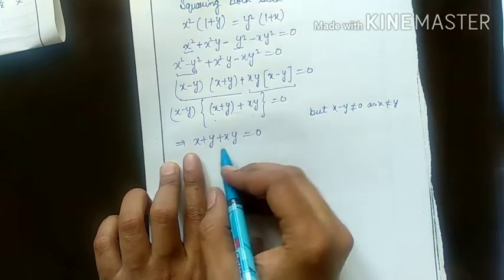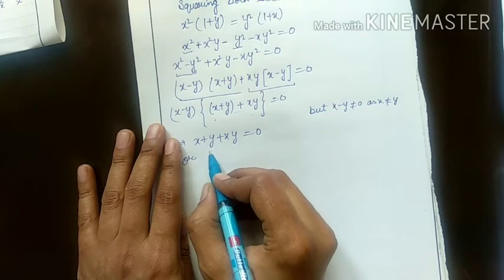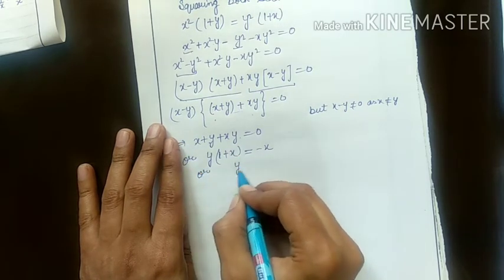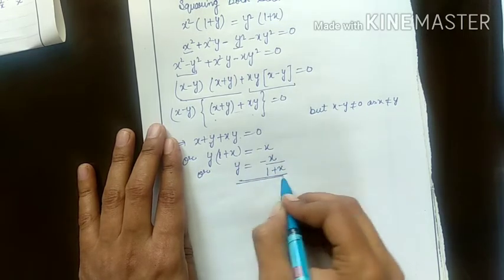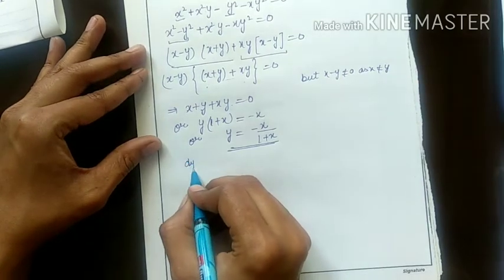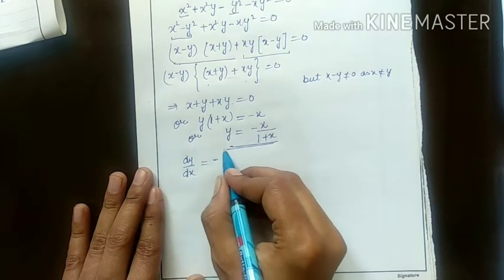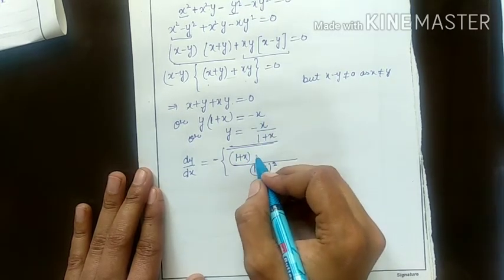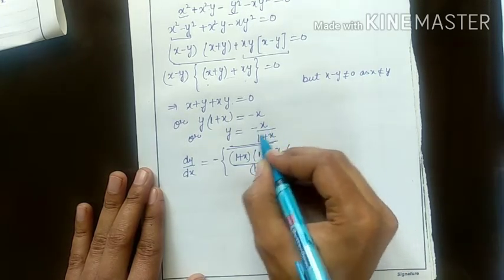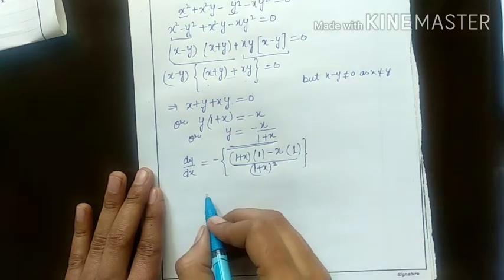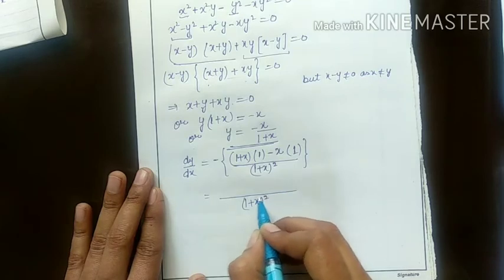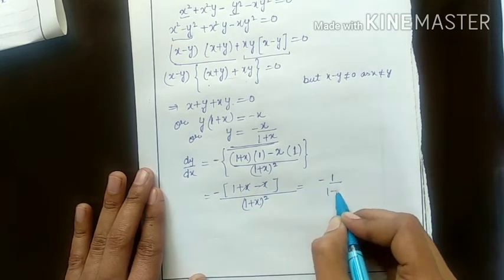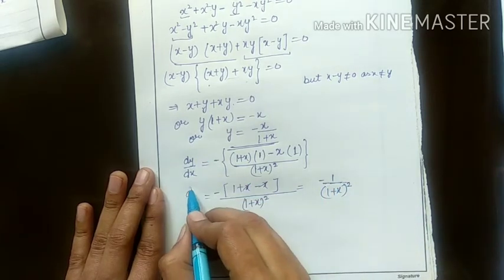You can directly differentiate now, but first find y's value. x goes to the right side as minus yx, and taking y common gives y(1 plus x), so y equals minus x upon 1 plus x. See how simple it has become. Now differentiate using the quotient rule. With minus sign outside, denominator whole square: denominator as it is times derivative of numerator (x's derivative is 1), minus x as it is times derivative of denominator (which is 1). This gives 1 plus x minus x — x's cancel — this is minus 1 upon (1 plus x) whole square. This is your dy by dx answer.